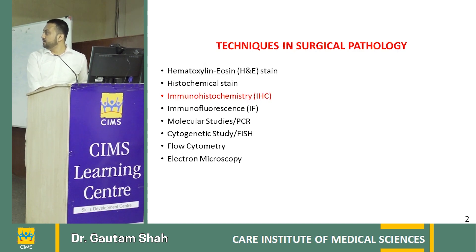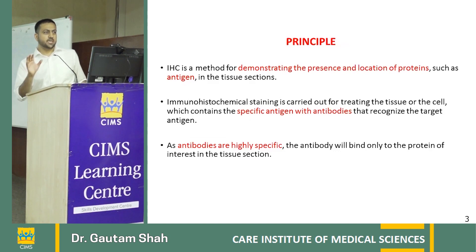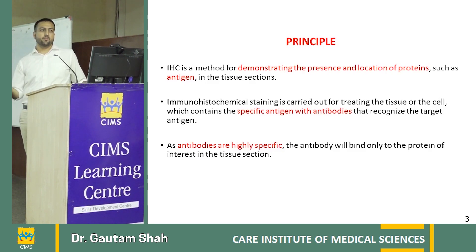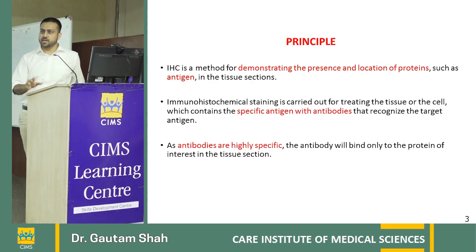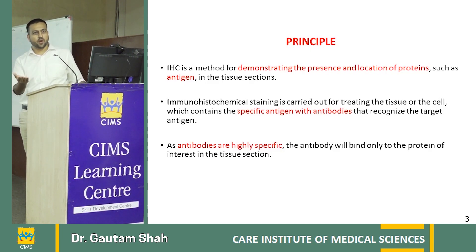Immunohistochemistry is a very important tool in current management. The principle is in three words: immune, histo, and chemistry. 'Immune' means antigen-antibody complex, 'histo' means on the tissue, and 'chemistry' means adding chemicals to make it visualizable on the slide. The goal is to demonstrate a particular antigen on the tissue by pouring a highly specific antibody for it. If the antigen is present, an antigen-antibody complex forms; a chromogen substrate is then added, which attaches to the complex and gives a color visible on light microscopy. If no complex forms, there is no color change.